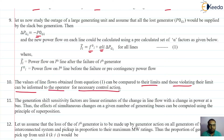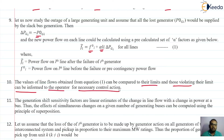When we get the change in line flow, we can compare it with their ratings. If any of the line flow is violating its limit, we can inform the operator that because of the outage of that generator, this line is now getting overloaded and please take some necessary control action to avoid that violation or overloading condition.